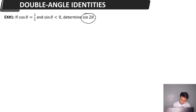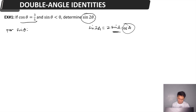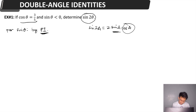Applying the double angle identity for the sine function: sine 2 theta equals 2 sine theta cosine theta. We already know the value of cosine theta, which is 3 over 5. What we need to find is sine theta. Since we know the value of cosine theta, we can apply one of the fundamental identities — the Pythagorean Identity: sine squared theta plus cosine squared theta equals 1. We can solve for sine theta using this identity.